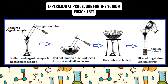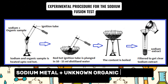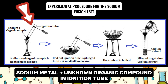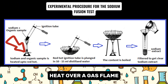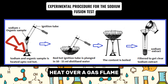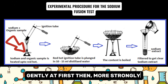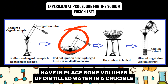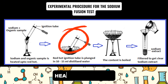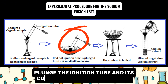To carry out the sodium fusion experiment and obtain the sodium fusion extract, a sample of the organic compound is placed alongside sodium metal that has been mopped off from a filter paper into an ignition tube. Once placed, you start heating over a flame — gently at first, and then more strongly — until the ignition tube is red hot. You should have a volume of water in a crucible prepared in advance.